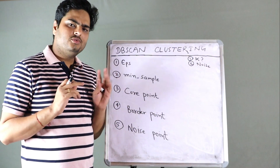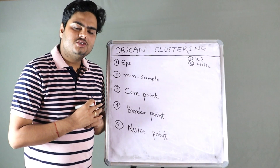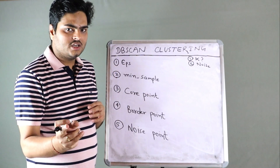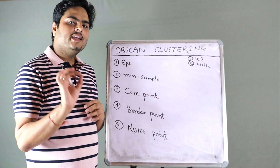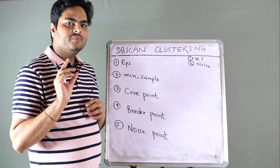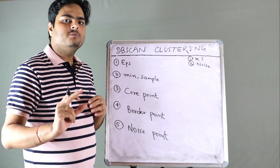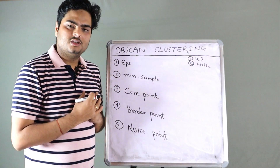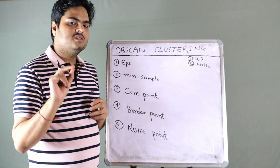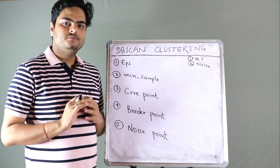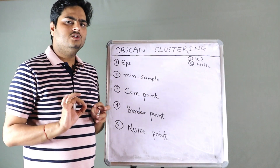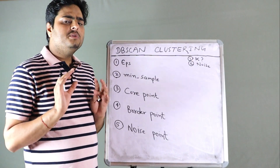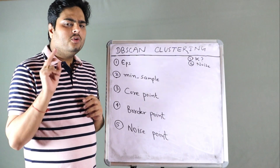Point number two: K-means clustering is very sensitive to noise and outliers. The reason is that K-means will try to include all data points in one or another cluster by calculating the distance. The problem comes if one point lies too far from the rest of the observations. I have created a detailed video on K-means — the link is here — but now let's look at how DBSCAN takes care of these two problems.